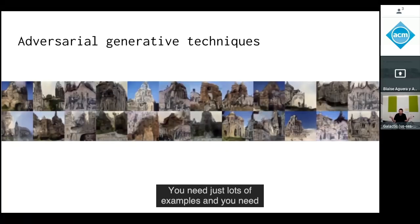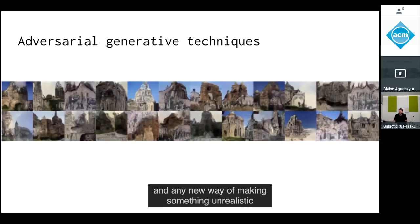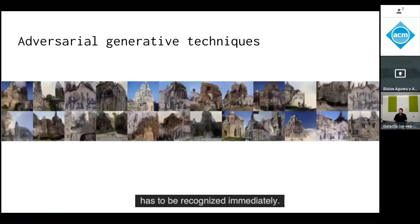You need lots of examples and the network to learn implicitly what looks realistic — any new way of making something unrealistic has to be recognized immediately.